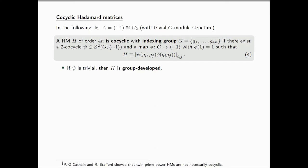On the other hand, if psi is trivial, then we say that H is group developed. Whenever this fellow is actually trivial, then we end up with only this component. So we call it a group-developed Hadamard matrix. I think you've seen those a number of times already.